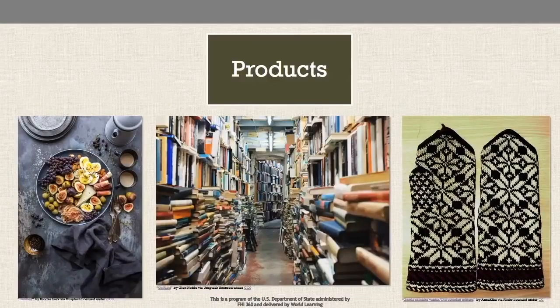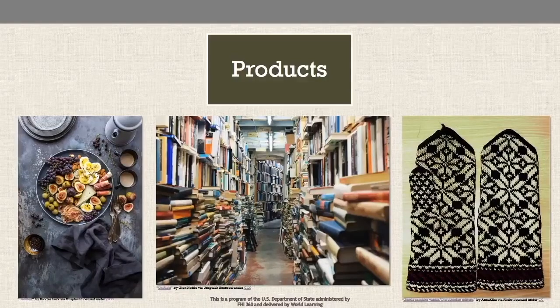Food is often the first cultural product that people think of when they think about another culture. The special foods associated with a particular culture are often the first thing someone unfamiliar with the culture learns about it. Other cultural products include clothing, music, and literature.